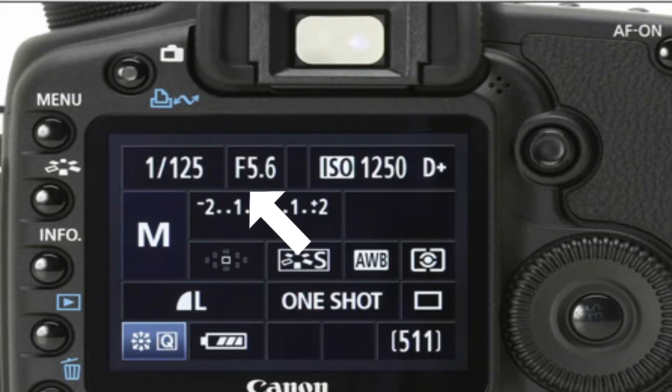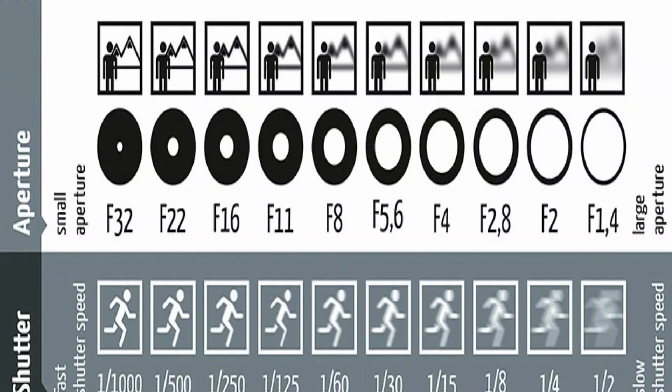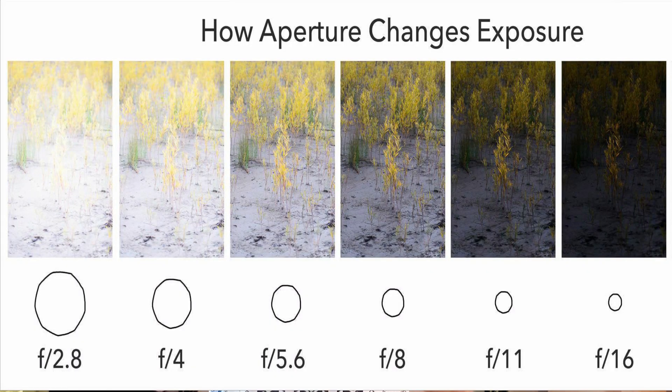Now we're going to talk about the second thing, which is your aperture. Aperture is something that controls the light that comes into your camera. It determines whether the light required to click the picture will help you get the picture bright or dark — it depends on what your composition is. For example, if you're clicking a picture at night and there are just two or three beams of street light, all you have to do is take your aperture lower. A 50mm lens has an aperture of 1.8, and I will show you an example clicked at a higher aperture and a lower aperture.